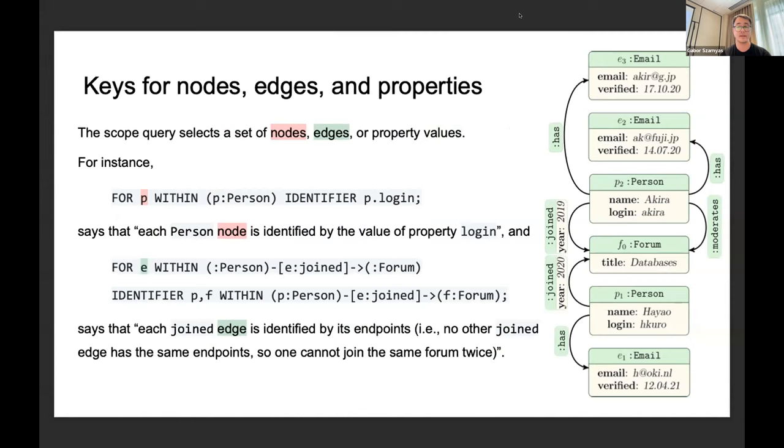Next, we're able to specify keys not just on nodes but also on edges and properties. The scope query selects the nodes, edges, or properties to be identified. For example, we already saw people being identified by their login. For those p within that pattern, a single node, for each of those bindings the p, they are identified by their login value.